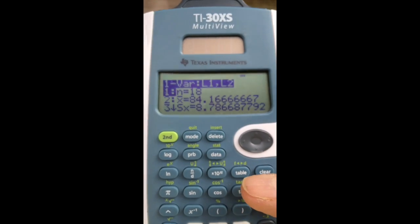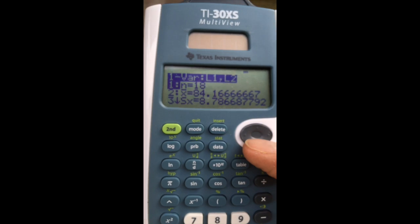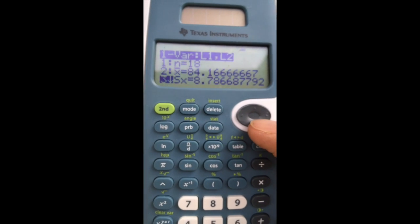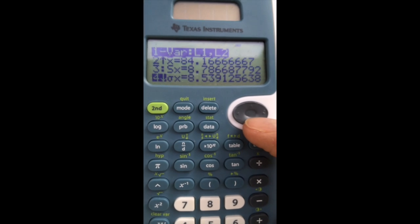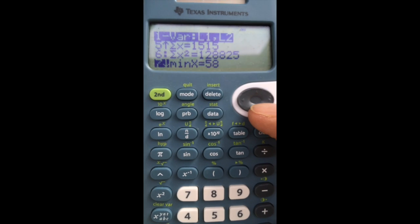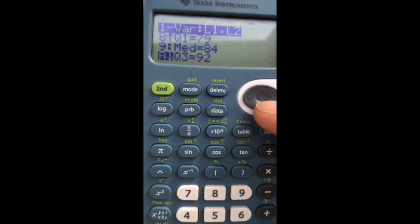So now, I have 18 numbers because of the frequencies. All the other information is here, the mean, the sample standard deviation, the population standard deviation, the sum of the x's and x squareds, and my five number summary.